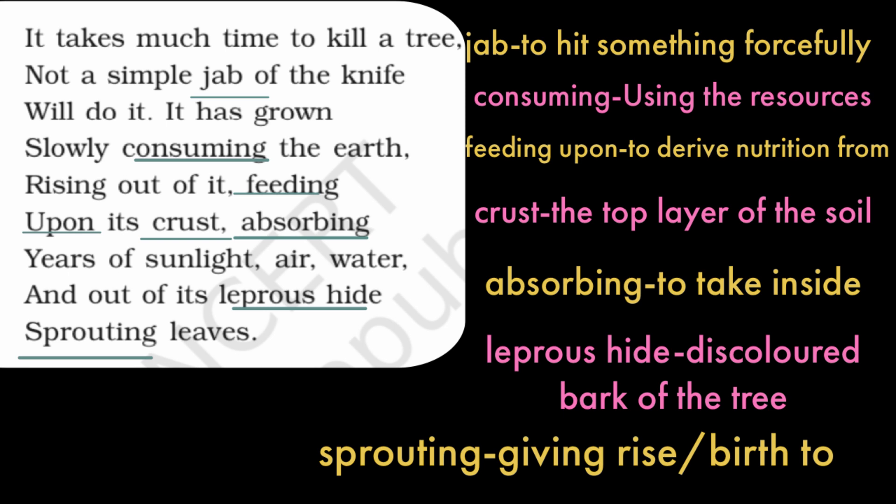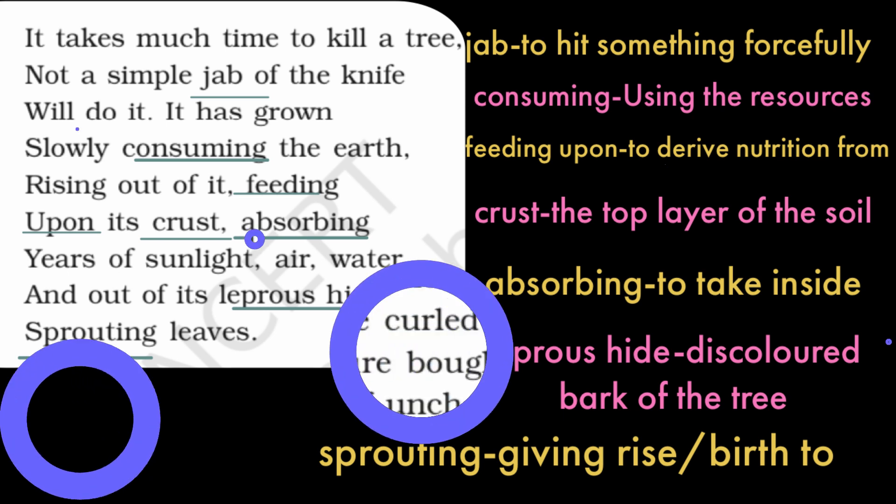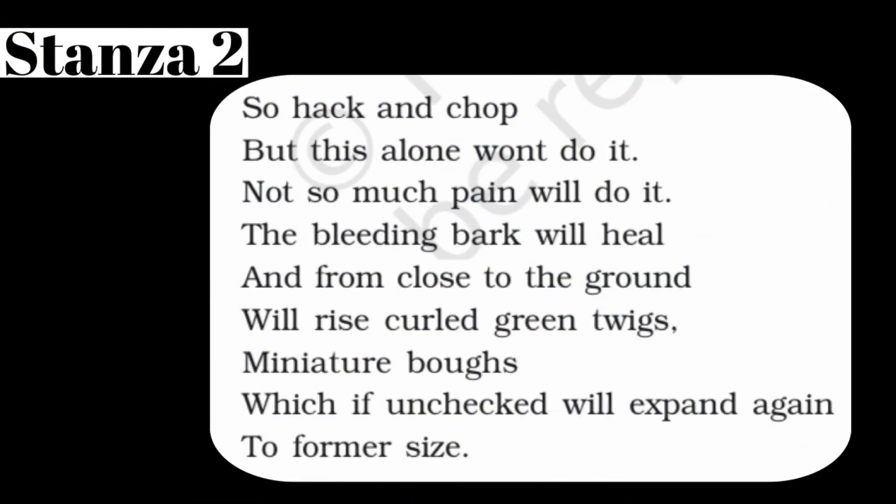The tree develops a strong trunk — 'leprous hide' refers to the discolored bark, with patches like the skin of a person suffering from leprosy. The trunk is light brown in some places and dark brown in others. It develops a strong trunk and gets numerous leaves on it.